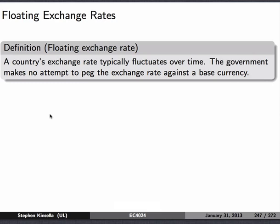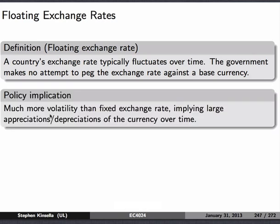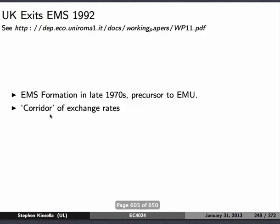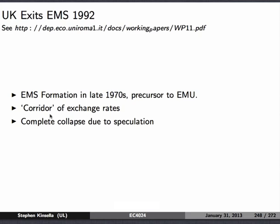Floating exchange rates involve fluctuation over time where the government makes very little attempt to peg the exchange rate against a base currency. This means there's a lot more volatility in the exchange rate, implying appreciations and depreciations of the currency over time. In the 1990s, the UK exited the European Monetary System — a precursor to EMU where one tried to keep a corridor of exchange rates at all times. It completely collapsed because of massive speculation on the part of people like George Soros, and it was a big blow to the EMS and the European project at the time.